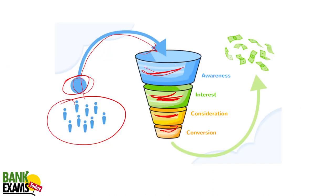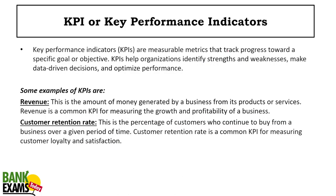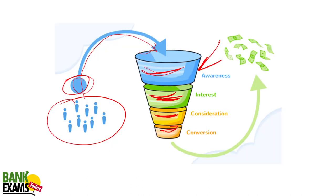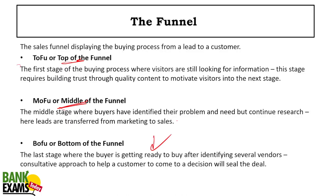Top of the funnel is awareness. Middle of the funnel is when buyers have identified their problems and continue to research to get the best product and value for money. Bottom of the funnel is where they are ready to buy and looking for coupons or offers — that is where the money is. This is also called the sales funnel. This is very important and questions from this topic have appeared in previous papers.